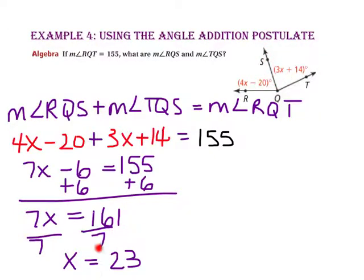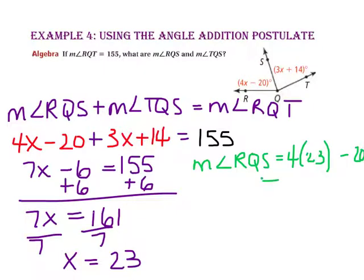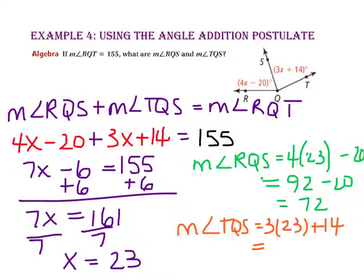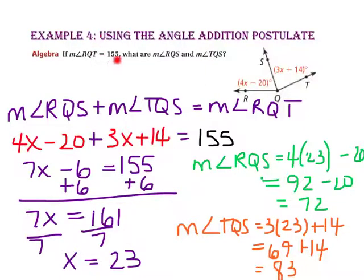Substituting 23 in for X: 4 times 23 is 92, minus 20 is 72 — so the measure of angle RQS is 72. 3 times 23 is 69, plus 14 is 83 — so the measure of angle TQS is 83. Let's do a quick check: is 72 plus 83 equal to 155? Since it is, we know we have solved this problem correctly.